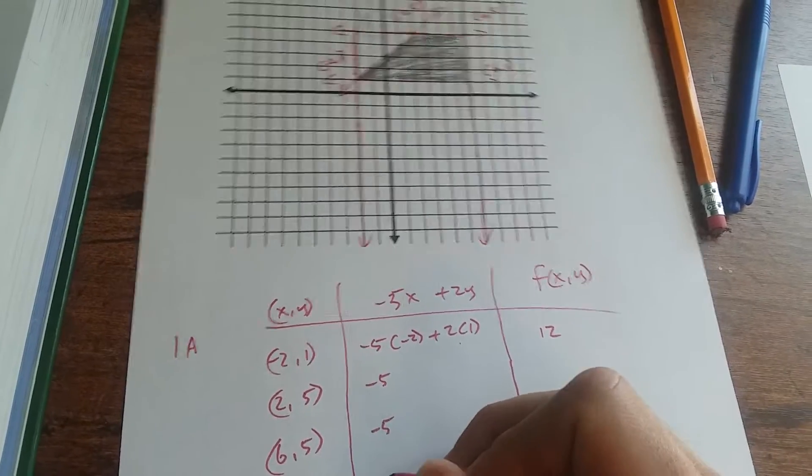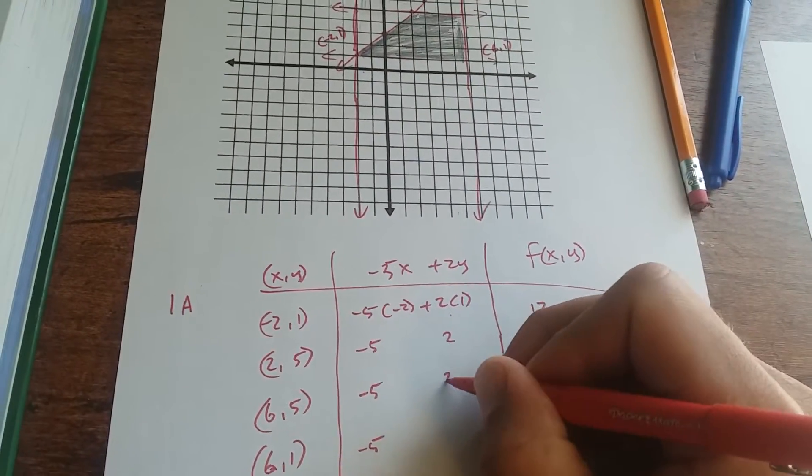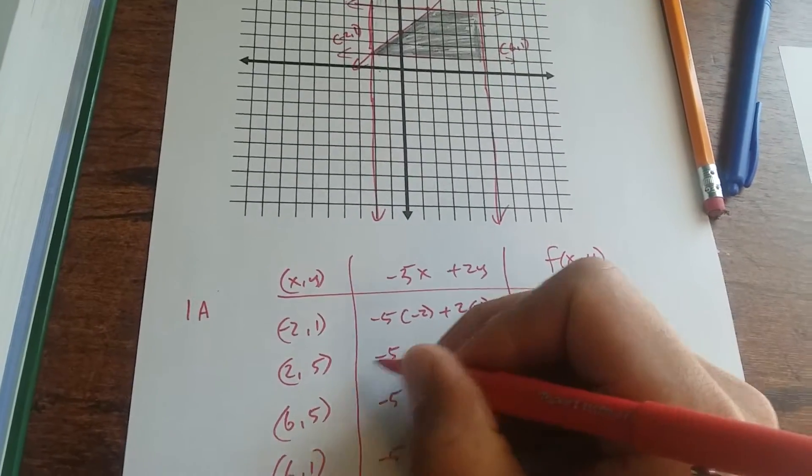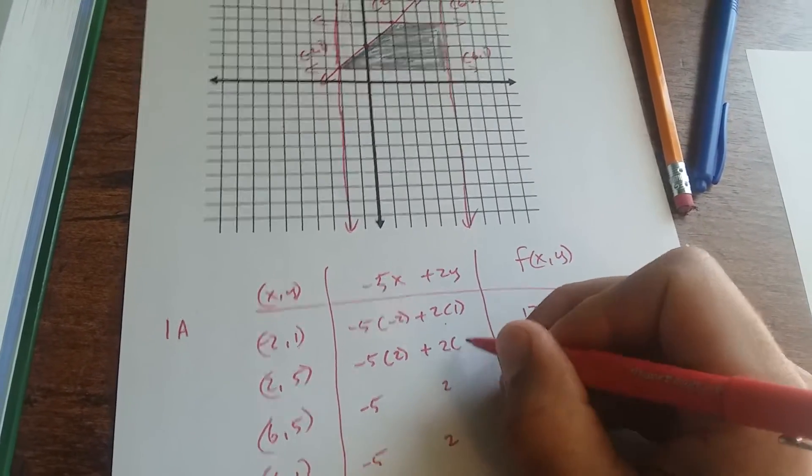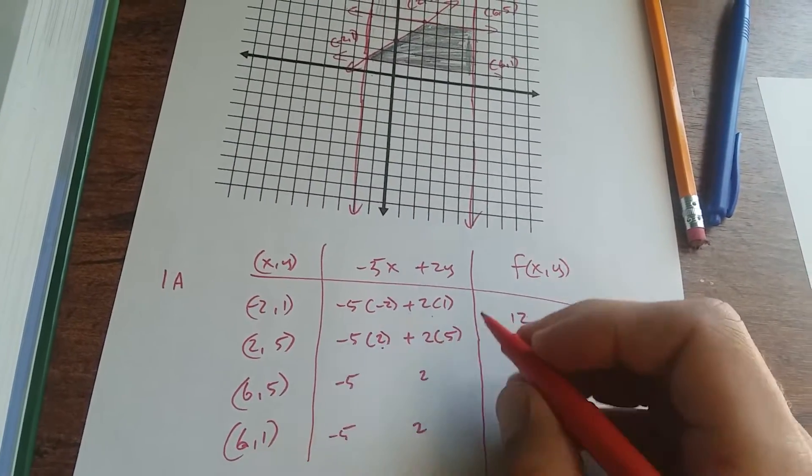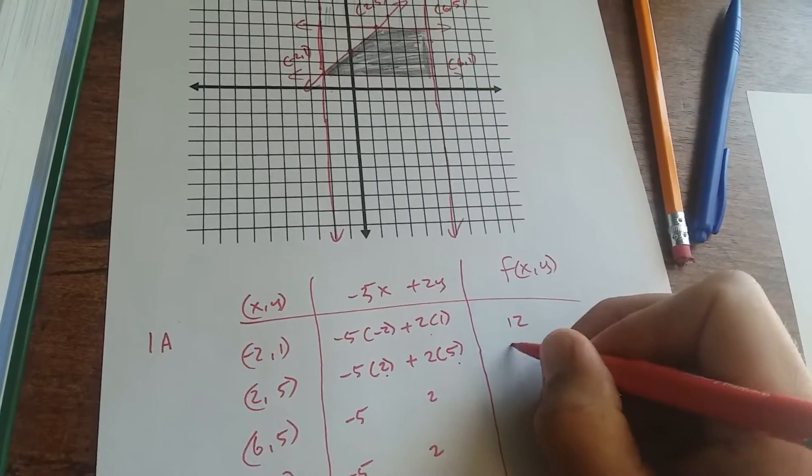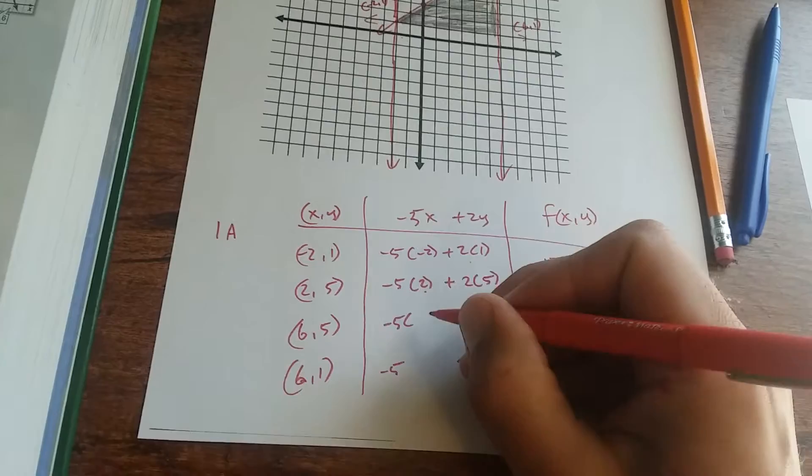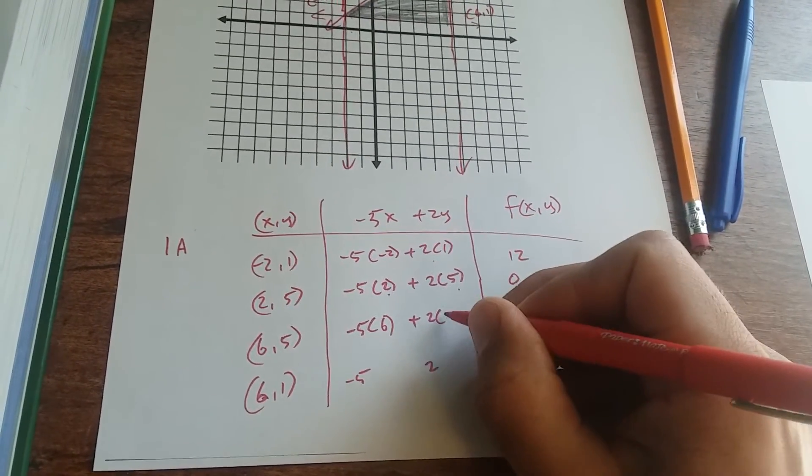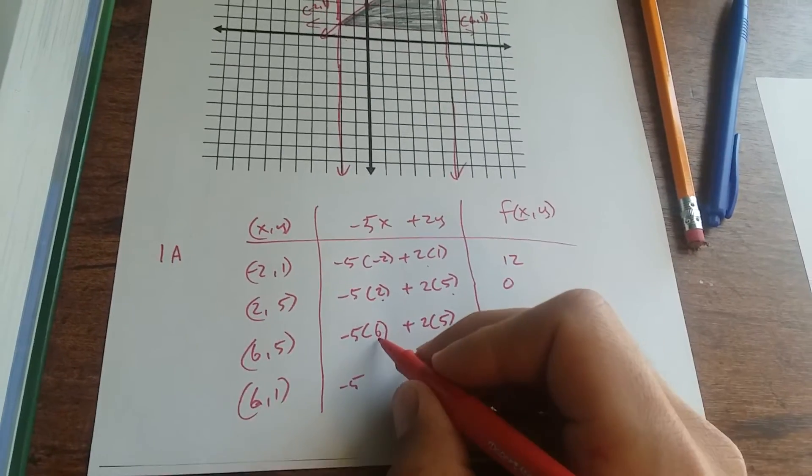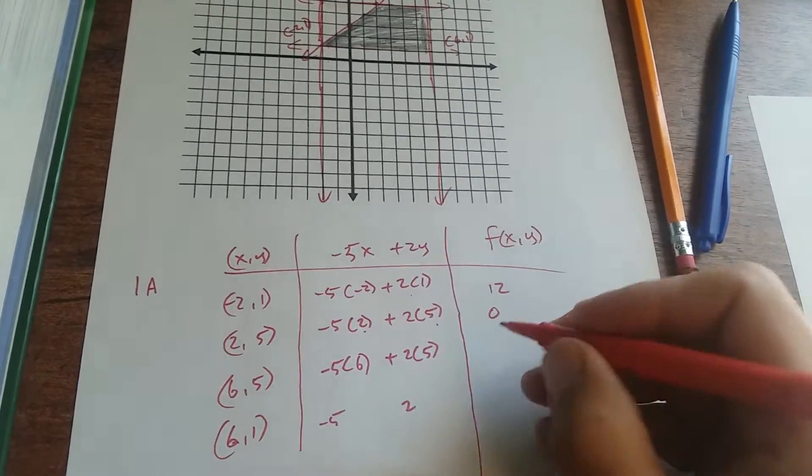Negative 5 times 2 plus 2 times 5, you get negative 10 plus 10 is 0. Negative 5 times 6 plus 2 times 5, you get negative 30 plus 10 is negative 20.